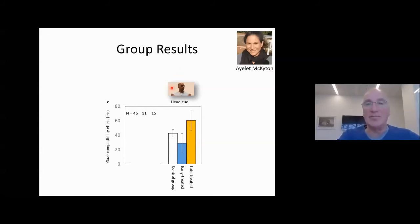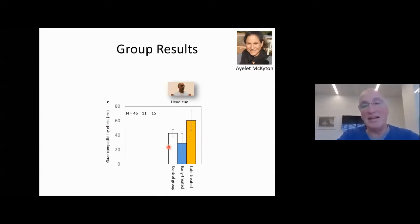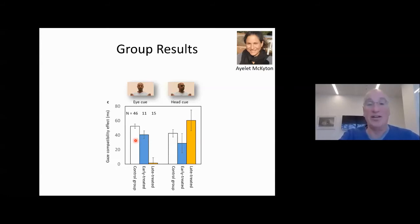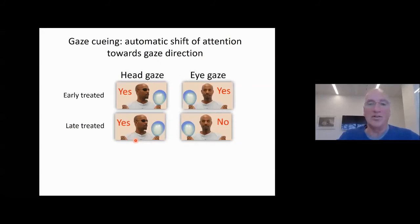Looking at the gaze compatibility effect — the effect of the cue supplied by head orientation — you find that late-treated, controls, and early-treated all have a significant effect. If anything, the late-treated have an effect as big or even bigger than in controls and the early-treated. But if you look at the eye gaze compatibility effect, there is no effect whatsoever in the late-treated, while the early-treated have a similar effect to controls, after blurring. The take-home message: with early-treated, they can use both head gaze and eye gaze information. But the late-treated can only use head gaze information — they cannot use eye gaze information to automatically shift their attention toward the gazed-upon direction.